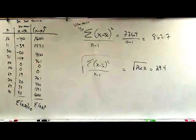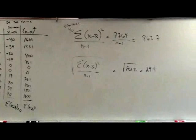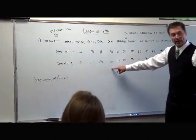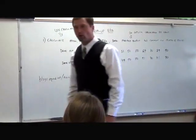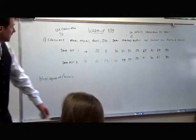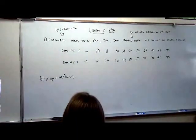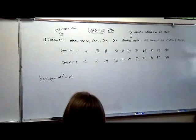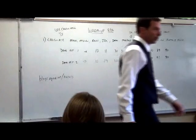Now, I have a question for you. Standard deviation for this data is twenty-nine point four. Just answer in your head — I don't want it out loud. Will the standard deviation for the second data set be higher or lower than twenty-nine point four? Make your prediction in your head. Everybody got your prediction? Higher or lower than twenty-nine point four?